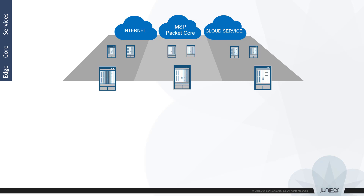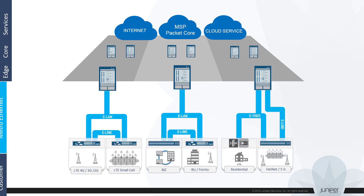Juniper Networks is often associated with packet switched networking solutions geared toward core or multi-service edge, broadband gateways, and data centers. Starting from 2006 when the MX series was introduced, Juniper Networks put a tremendous amount of effort into developing a complete solution for Metro Ethernet use cases. This resulted in both delivering a complete portfolio of metro routing and switching platforms, along with a comprehensive feature set within the Junos operating system, which runs on all Juniper Networks platforms.